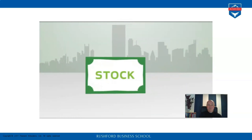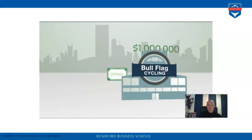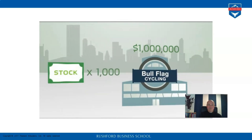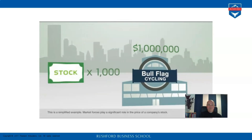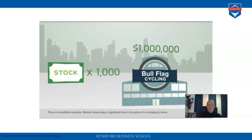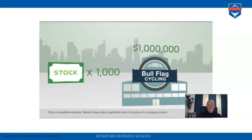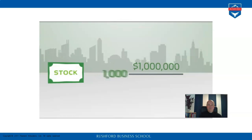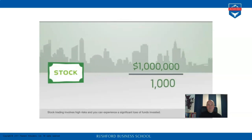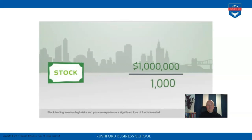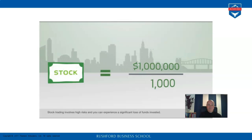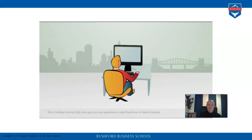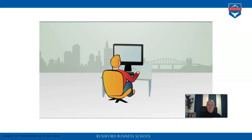Suppose the company decides to raise one million dollars and issues one thousand shares of stock. Because each share represents a fraction of the company's worth and there are one thousand shares, each share represents one one-thousandth of Bull Flag Cycling. Because the company is raising one million dollars at the initial public offering (IPO), each share would be initially valued at one thousand dollars.